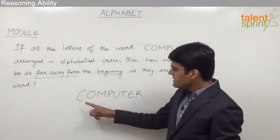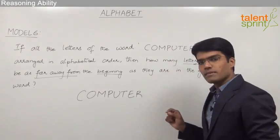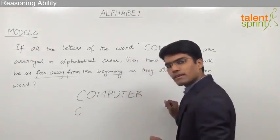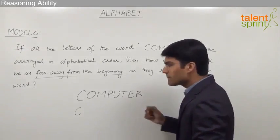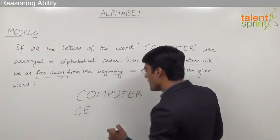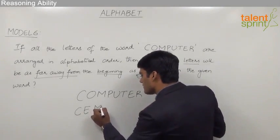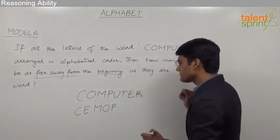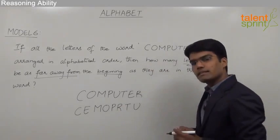Now the letters here are C O M P U T E R. If you try to arrange them in alphabetical order, the first letter would be C. The second letter which comes in alphabetical order here should be E followed by the letter M, which is followed by O, then comes P, then R, then T, and finally the letter U.